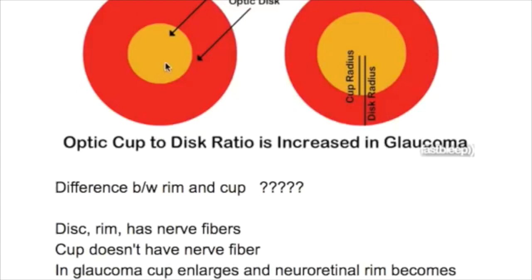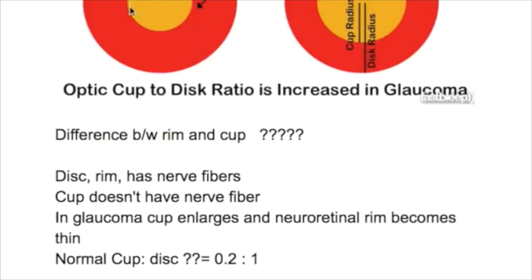What is the ratio between the cup and disc? The normal ratio between the cup and disc is 0.2 to 1, or 1 to 5. So if the cup increases in size, the neuroretinal tissue decreases in size. That is what happens when pressure is increased, as in glaucoma and other conditions.